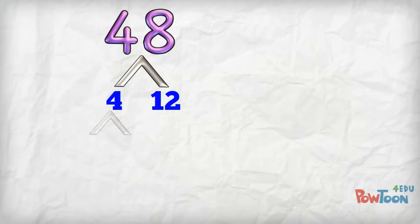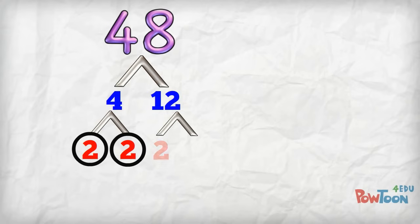4 comes from 2 times 2. 2 is prime so I circle them both and move on to the 12. 12 comes from 2 times 6 and 6 is from 2 times 3. I circle all the primes.